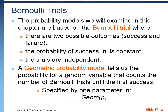The geometric probability model is asking us to find the probability of the number of trials until we see the first success. When dealing with a geometric probability model, we only have one parameter, which is that probability of success.